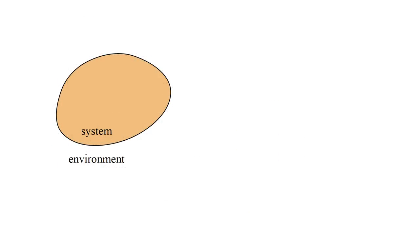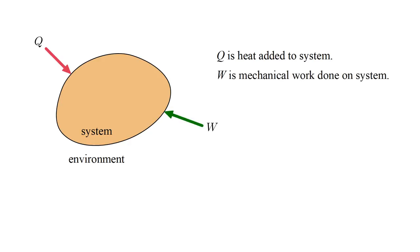Let's divide the universe into two pieces, a finite piece we call the system, and everything else we call the environment. We denote by Q heat added to the system from the environment. And by W work done on the system by the environment. U denotes the internal energy of the system. All three of these quantities have units of energy, joules.